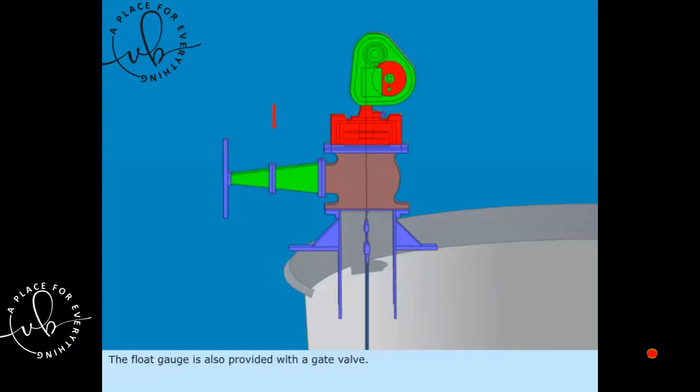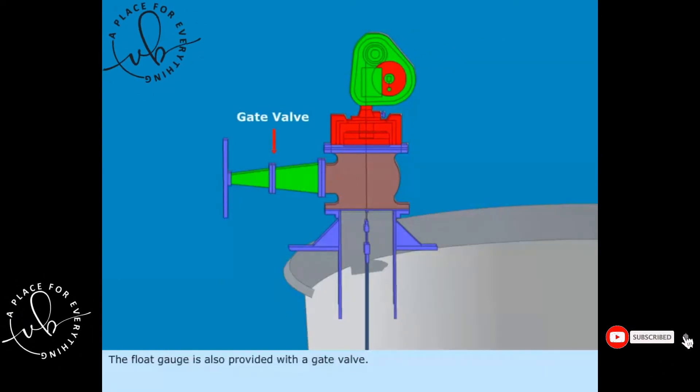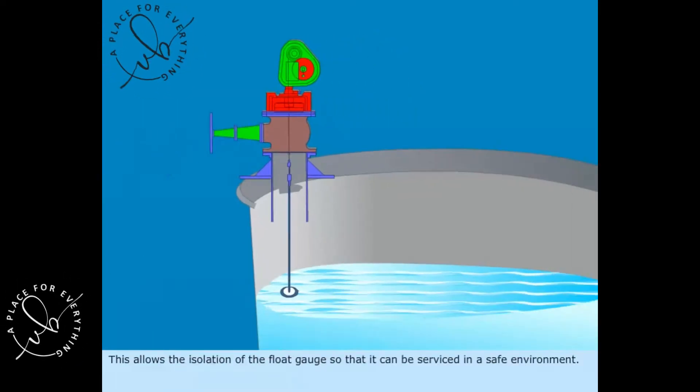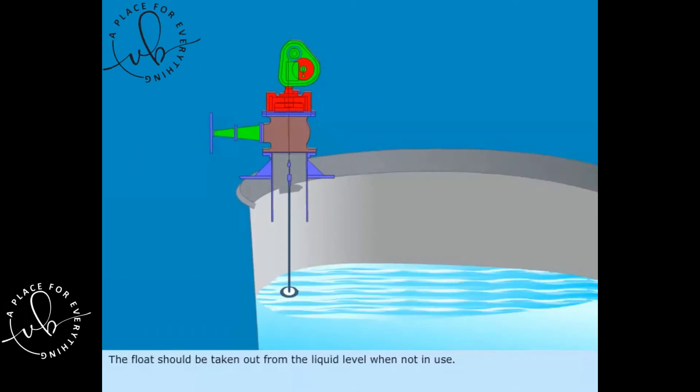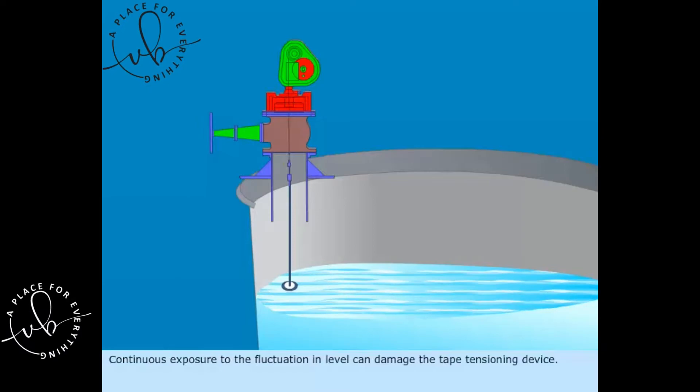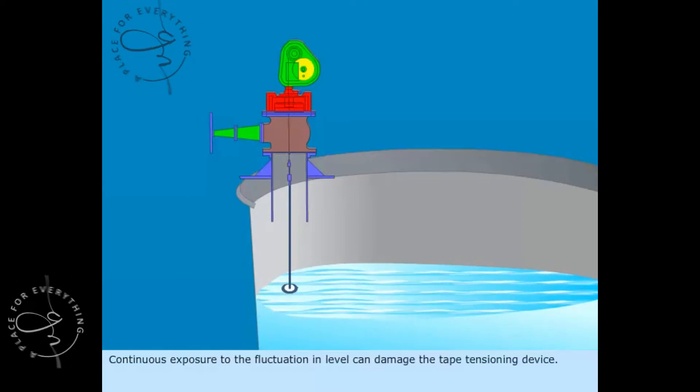The float gauge is also provided with a gate valve. This allows the isolation of the float gauge so that it can be serviced in a safe environment. The float should be taken out from the liquid level when not in use. Continuous exposure to the fluctuation in level can damage the tape tensioning device.